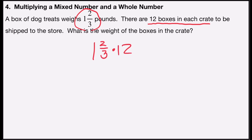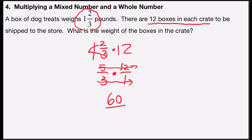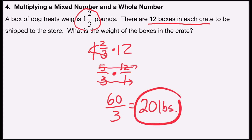Multiply one and two-thirds times twelve. Convert to fractions: three times one is three, plus two is five, back over three — so five-thirds — times twelve over one. Multiply across the top: five times twelve is sixty. Multiply across the bottom: three times one is three. Sixty divided by three is a clean twenty, so there will be twenty pounds of dog treats in the crate.